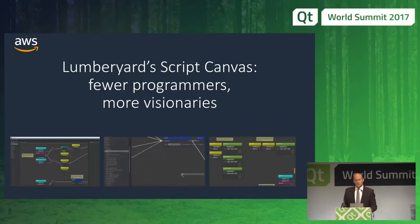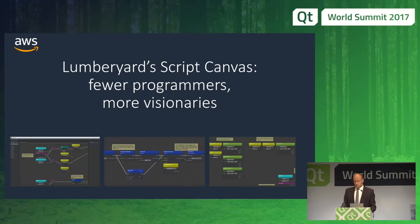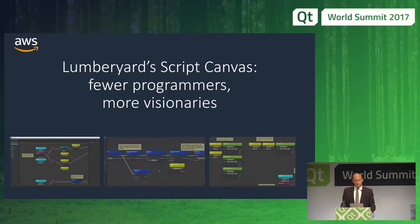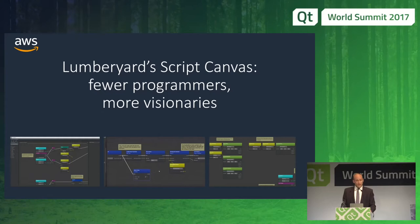ScriptCanvas is another new editor written with Qt, and it also uses a node-based approach, this time for logic scripting instead of animation. It is designed to marry well with EmotionFX such that you can create behaviors graphically and apply them to EmotionFX-made characters. It is a powerful scripting tool that can replace a lot of C++ and Lua work previously reserved only for software engineers. Hopefully its intuitive look and feel will empower non-programmers to dip their toe into the realm of scripting, much as QML has done for Qt users.